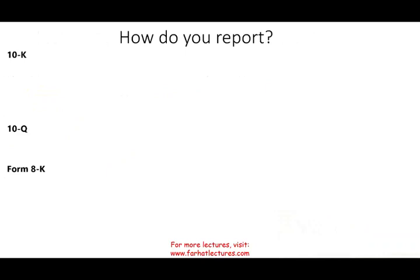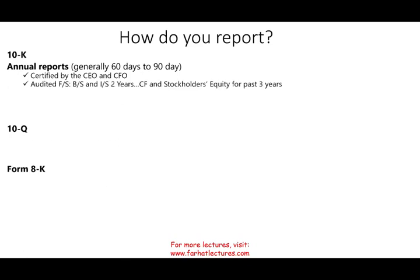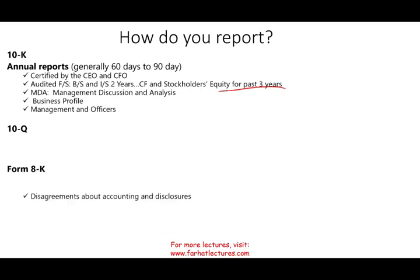How do companies report under the 1934 Act? Using Form 10-K, the annual report, which must be filed 60 to 90 days after year end depending on filer size. It must be certified by the CEO and CFO and includes audited financial statements — balance sheets for the last two years, and income statements, cash flows, and stockholders' equity for the past three years — plus MD&A, business profile, management information, pending lawsuits, and accounting disclosures.